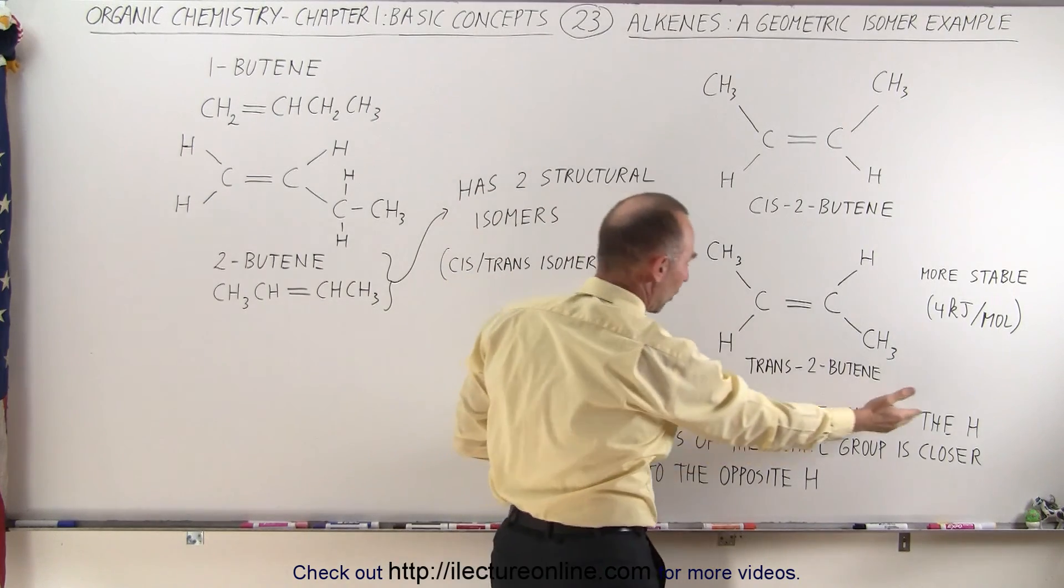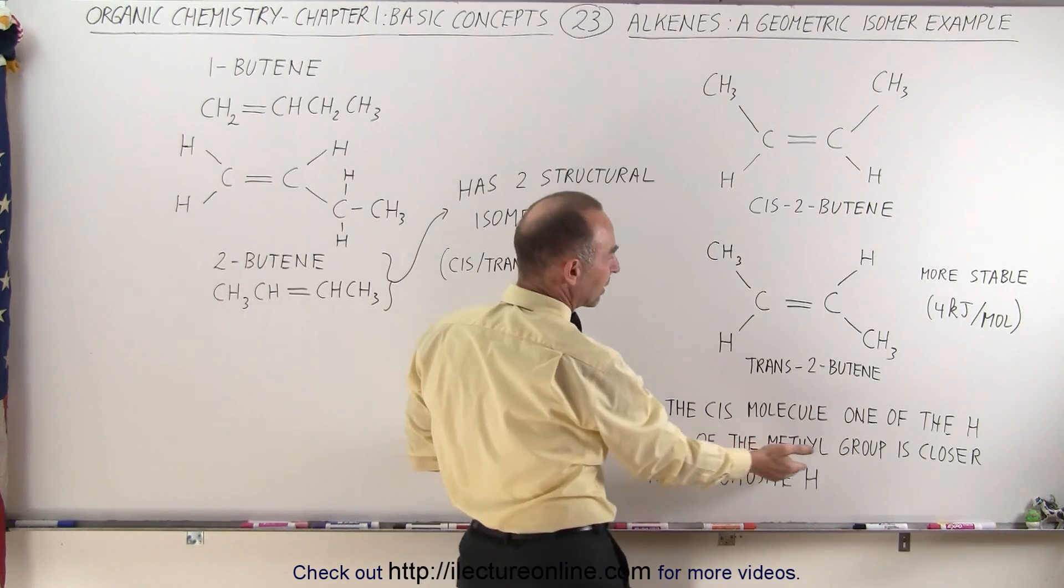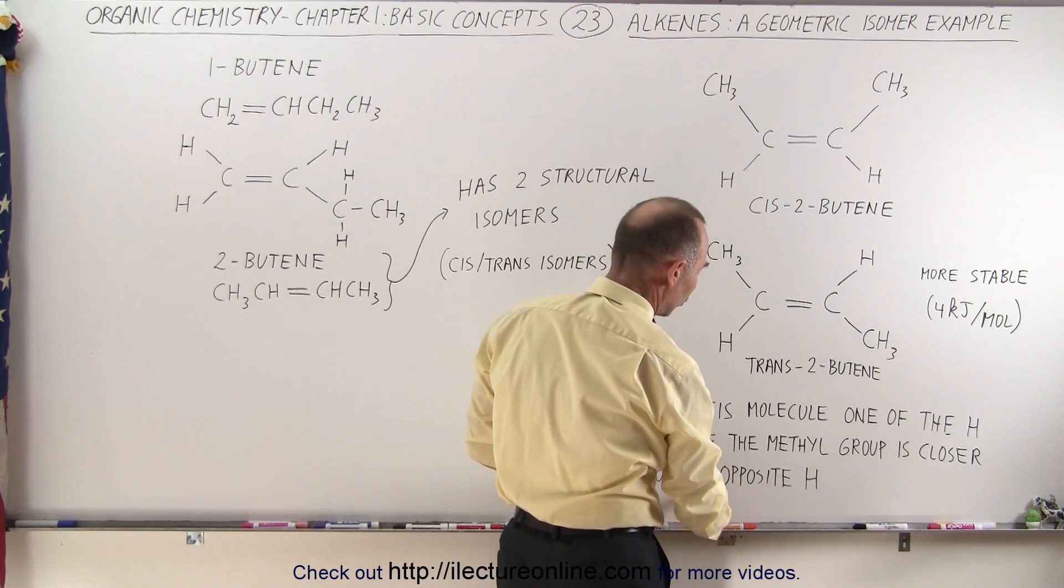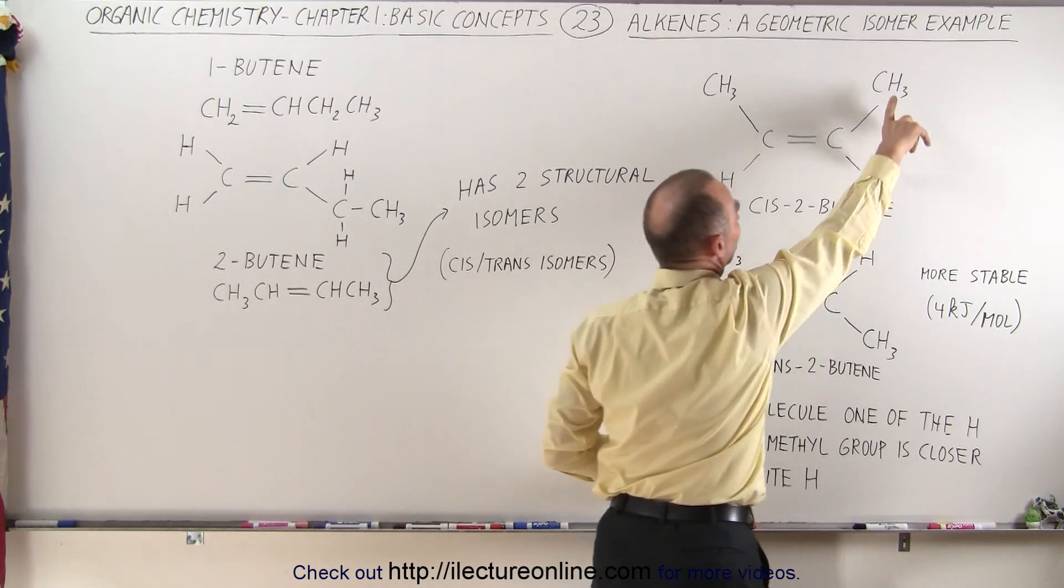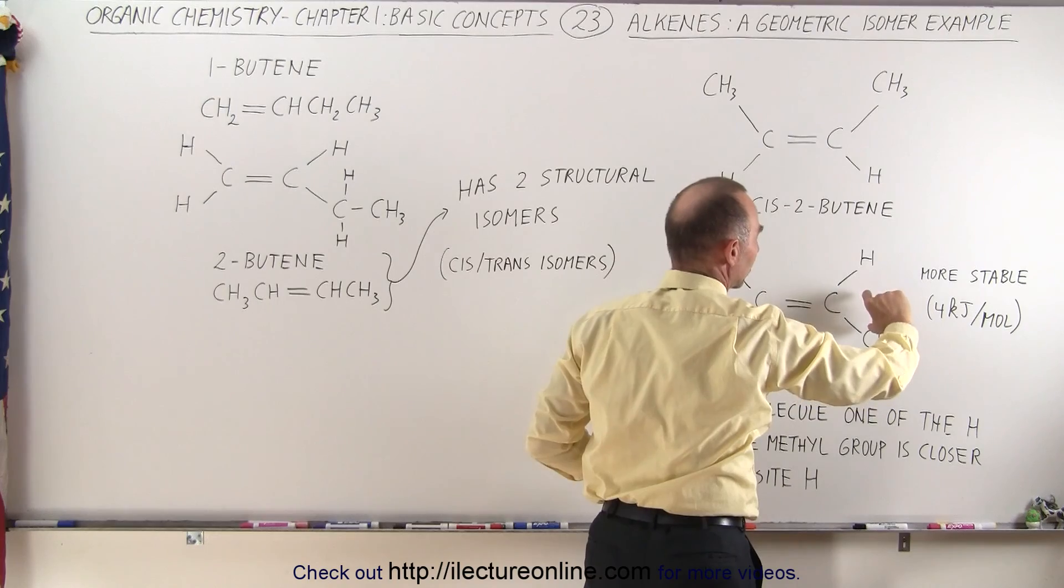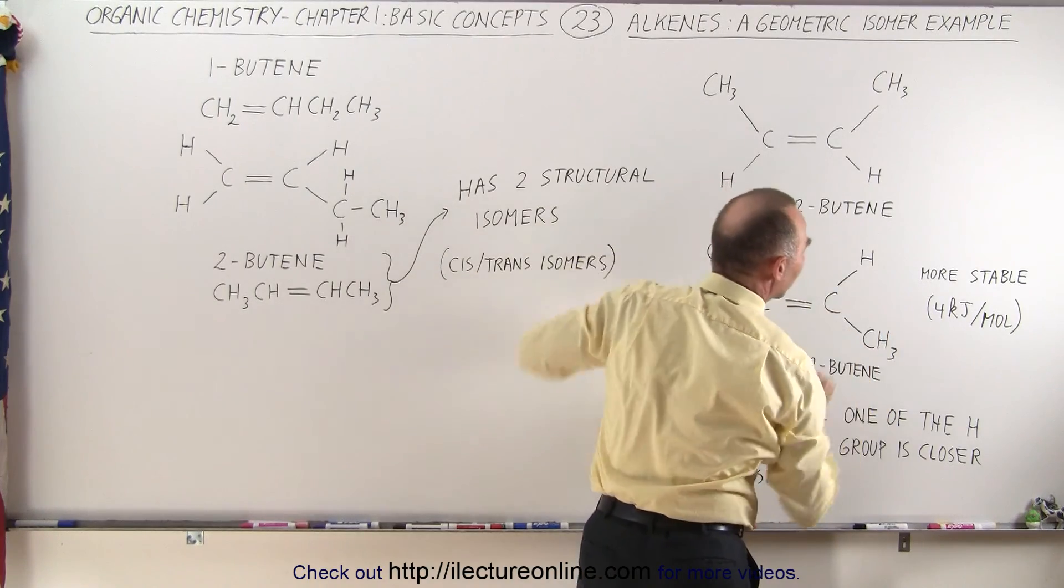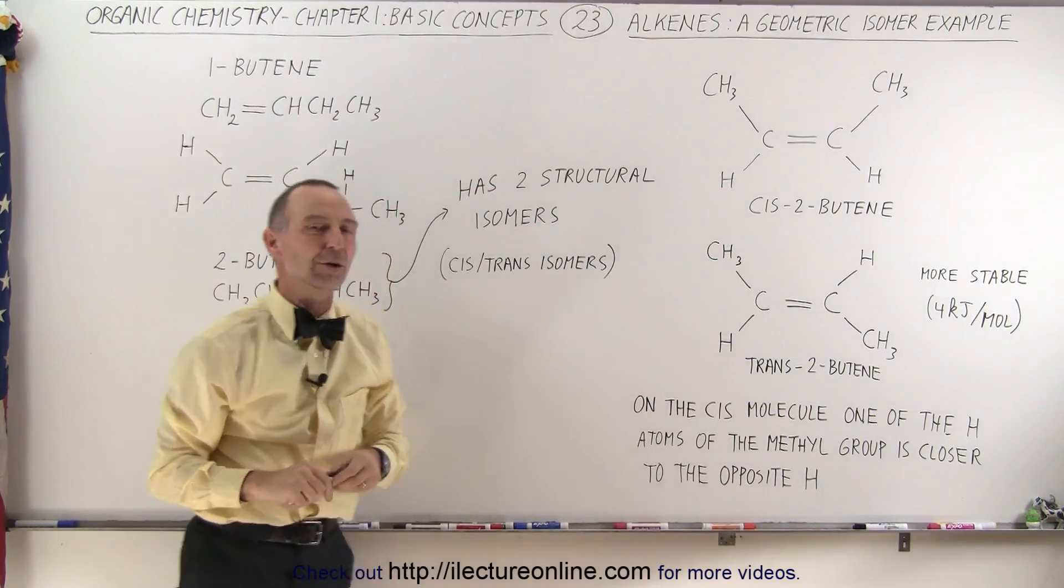So on the cis molecule, one of the H atoms of the methyl group is closer to the opposite H, so in this case these are close together. Here they're a little bit farther apart because the bond angle is a little bit greater, and therefore it's a more stable molecule.